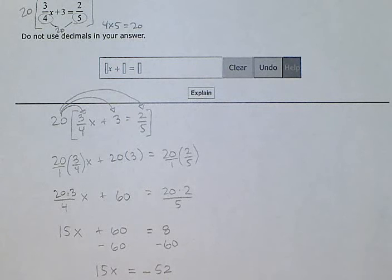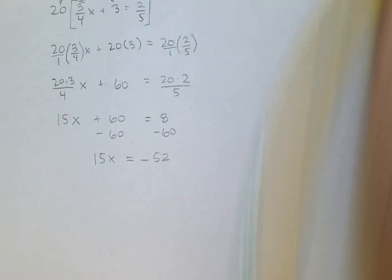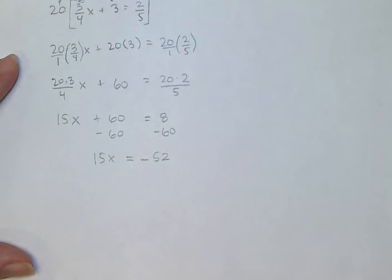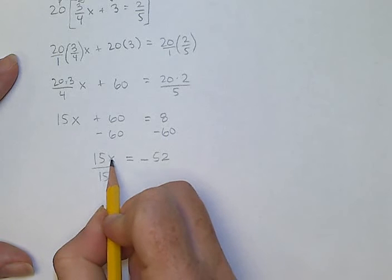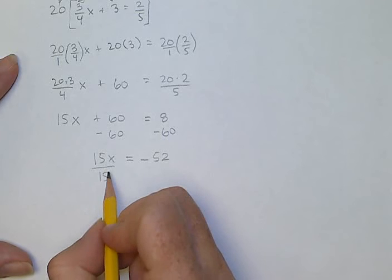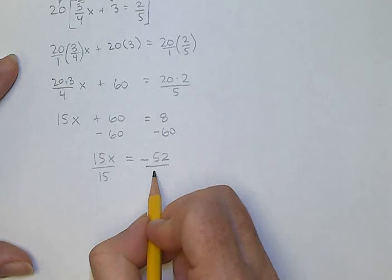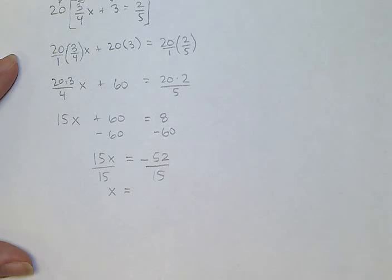So the next step. I'm going to have to move it up again. 15x equals minus 52. Now I'm going to divide by this 15. I want to get x by itself so I'm going to undo the multiply 15 by dividing by 15. I'm leaving the x over here. I want this x to stay over here. Now I have negative 52 divided by 15.